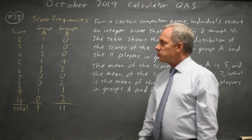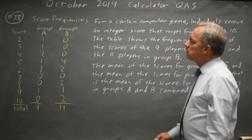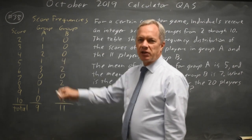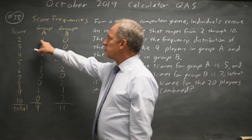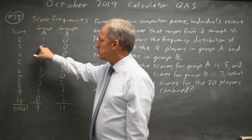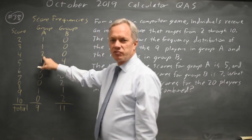This is question 38. College Board is asking for the mean for these scores, where we have a frequency distribution. And what this means is we have one score of two in group A, one score of three, and then two scores of four.